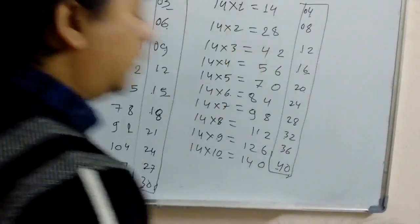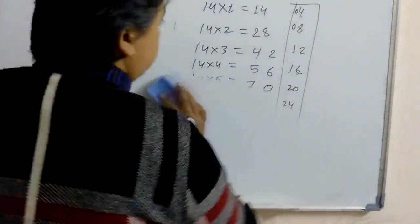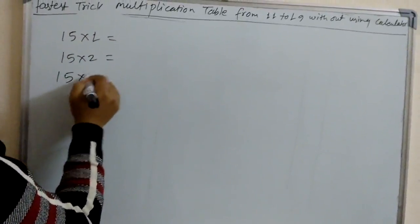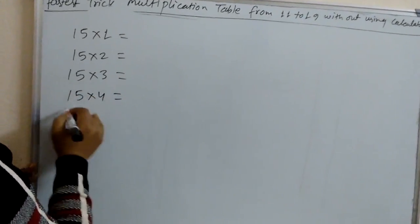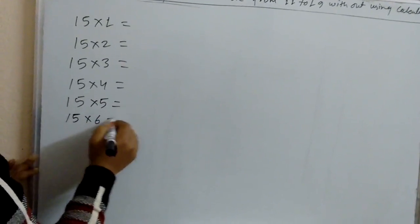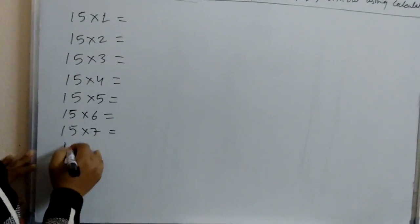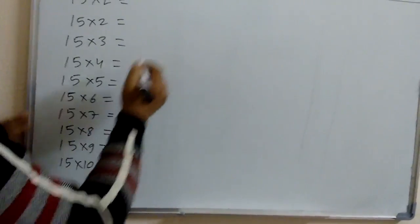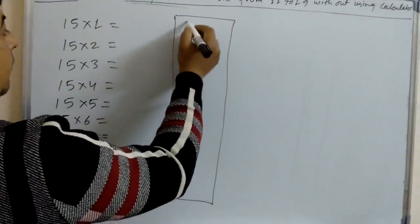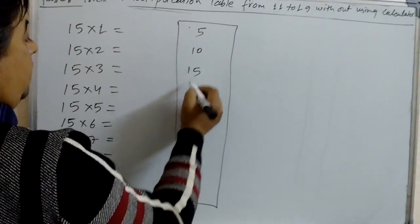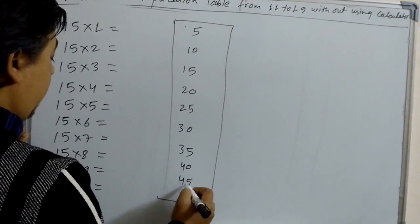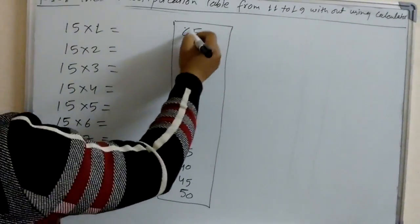Now let's learn the multiplication table of 15: 15×1, 15×2, 15×3, 15×4, 15×5, 15×6, 15×7, 15×8, 15×9, 15×10. For this we have to know the table of 5: 5, 10, 15, 20, 25, 30, 35, 40, 45, 50. Same method as previous.